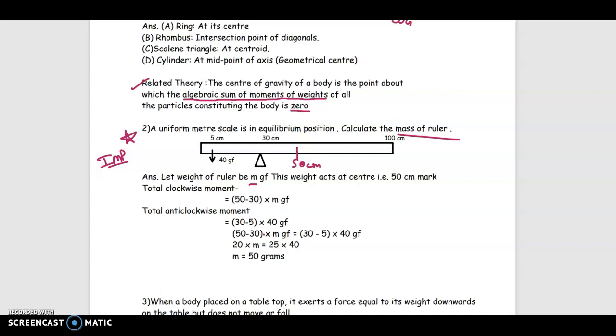This weight acts at center that is 50 centimeter mark. Now the total clockwise moment will be 50 minus 30. It will be like this, 50 minus 30 into m g f. That is the mass m. We have assumed the weight of the ruler is m.